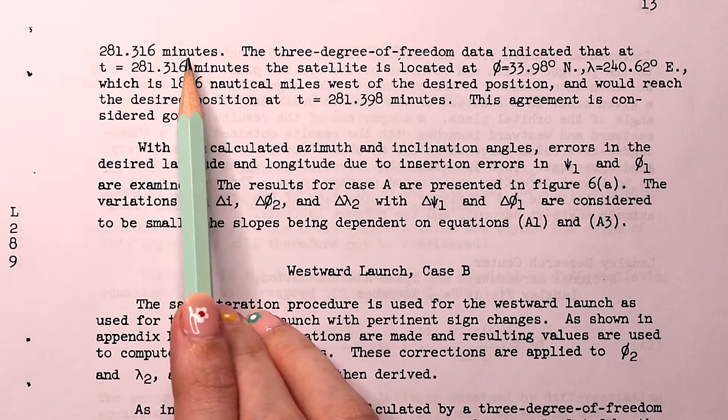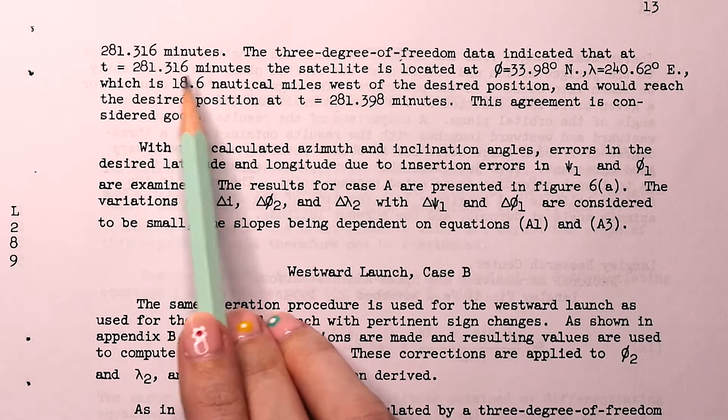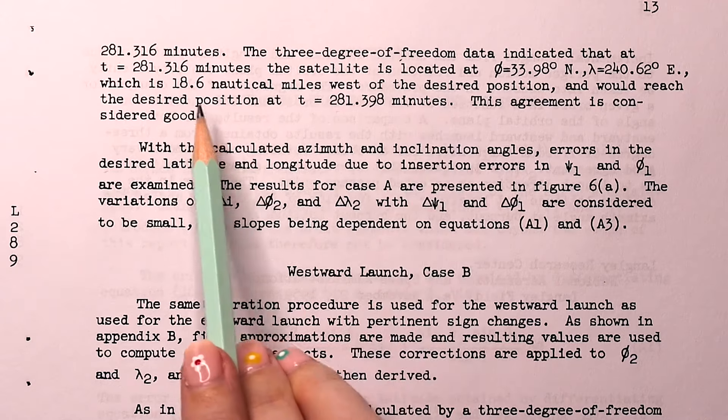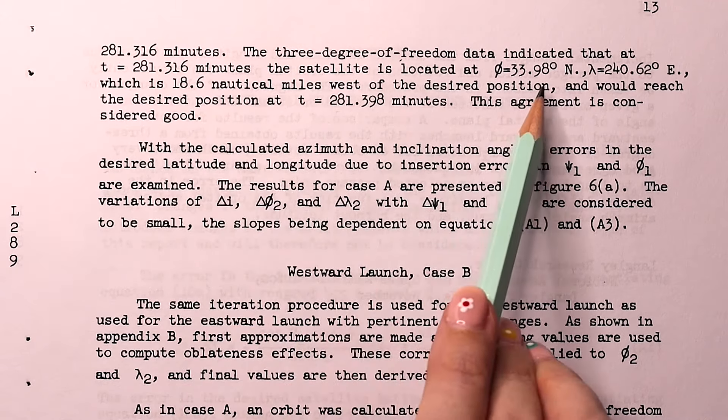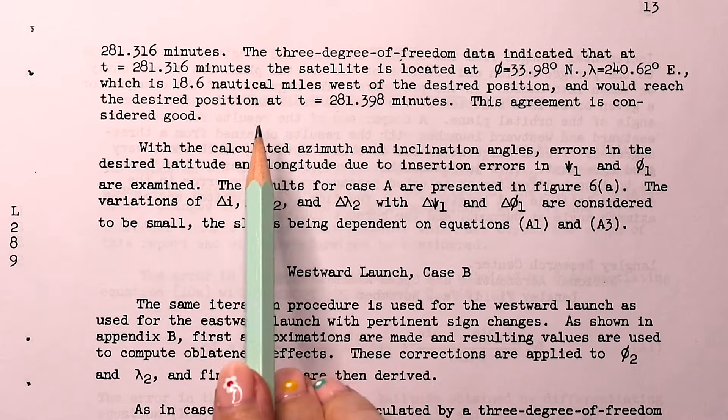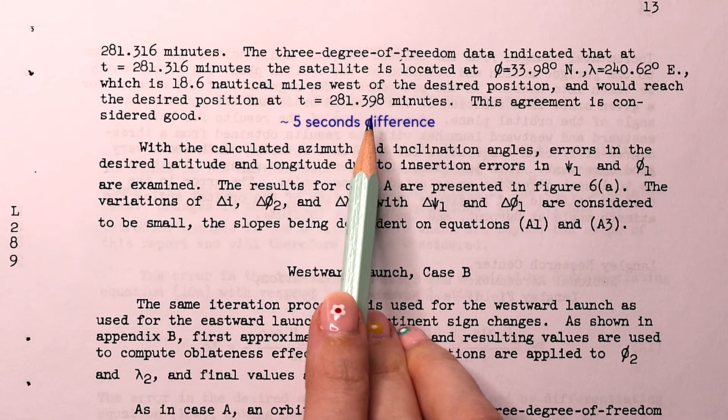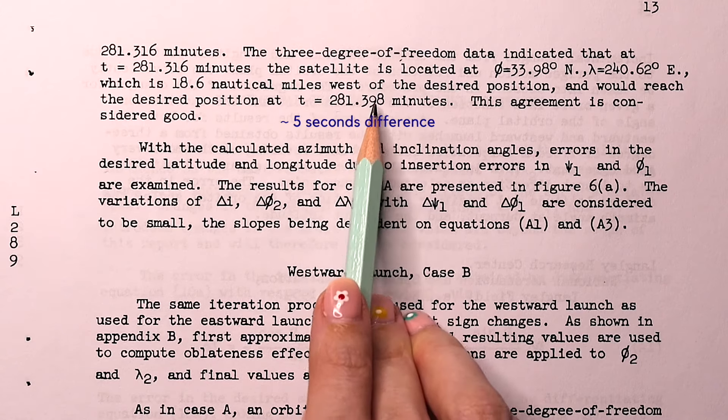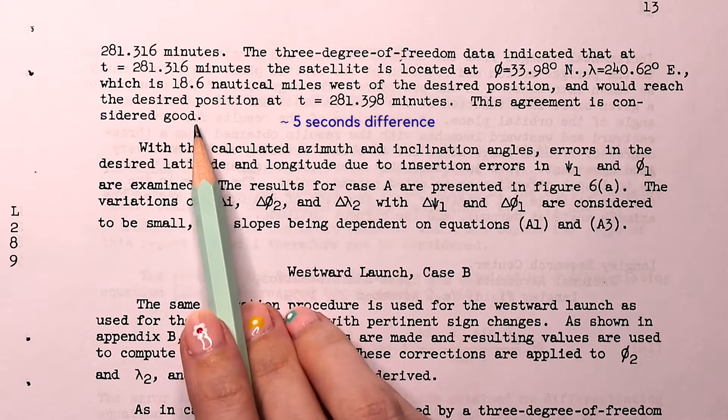Doing it by hand like in this paper indicates that the selected position would be reached in 281.316 minutes. But the computer data indicates that at the same time, the satellite would be 18.6 nautical miles west of the desired position and wouldn't reach the desired position until 281.398 minutes, which is just a little bit later. So this agreement is considered good.